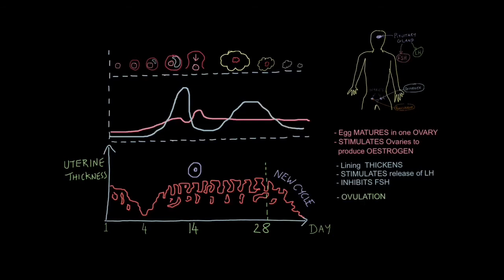Oestrogen stimulates the release of LH from the pituitary gland. LH remains low for most of the cycle, but just before day 14 it surges dramatically, then returns to low levels. The significance of this surge is ovulation — LH is directly linked to ovulation, stimulating the ovaries to release the egg cell.